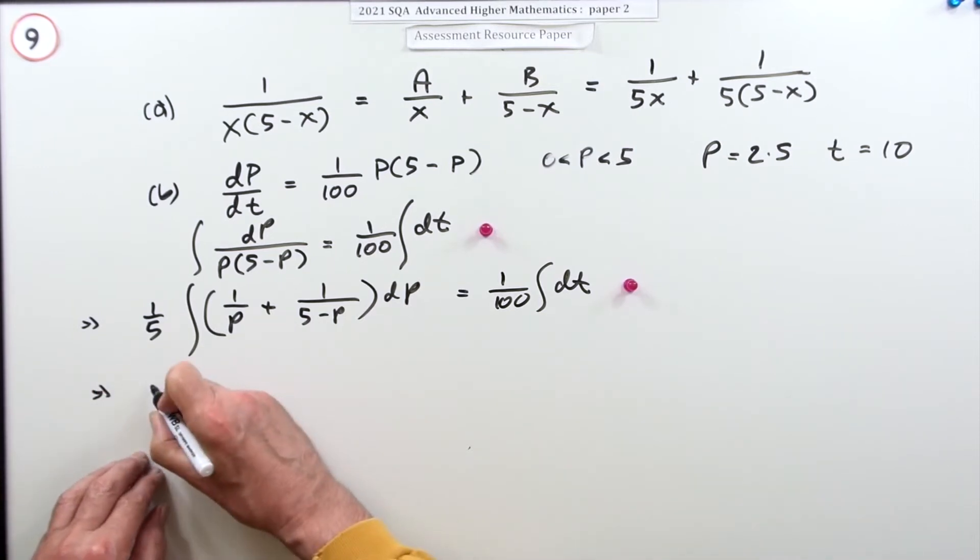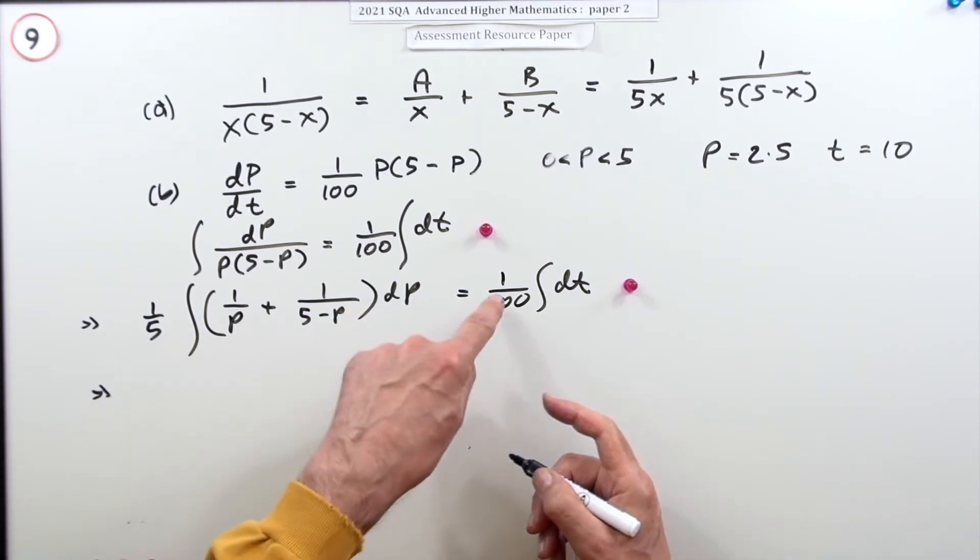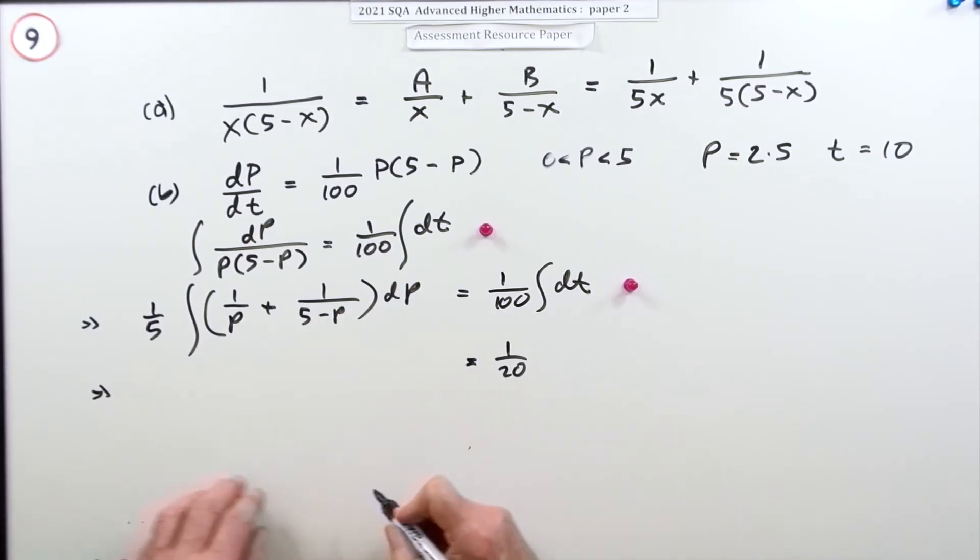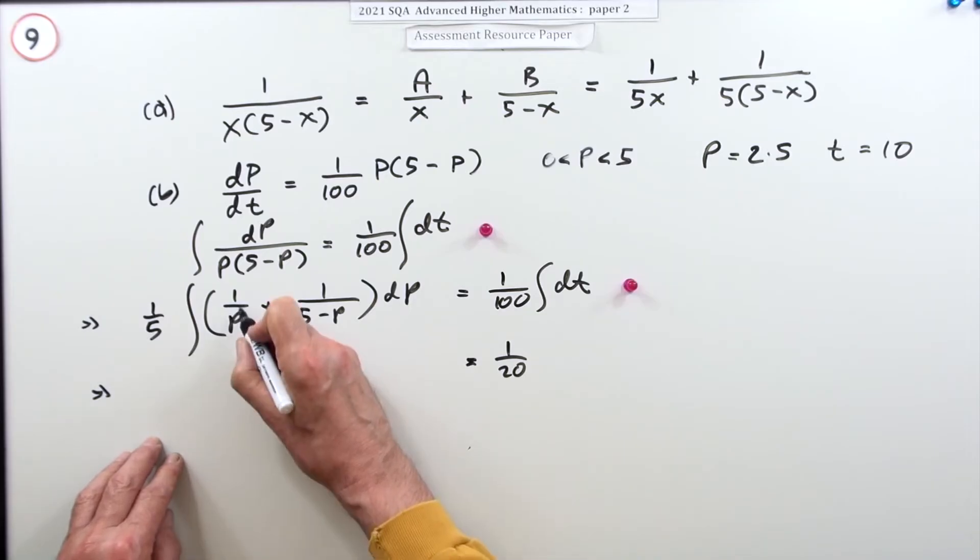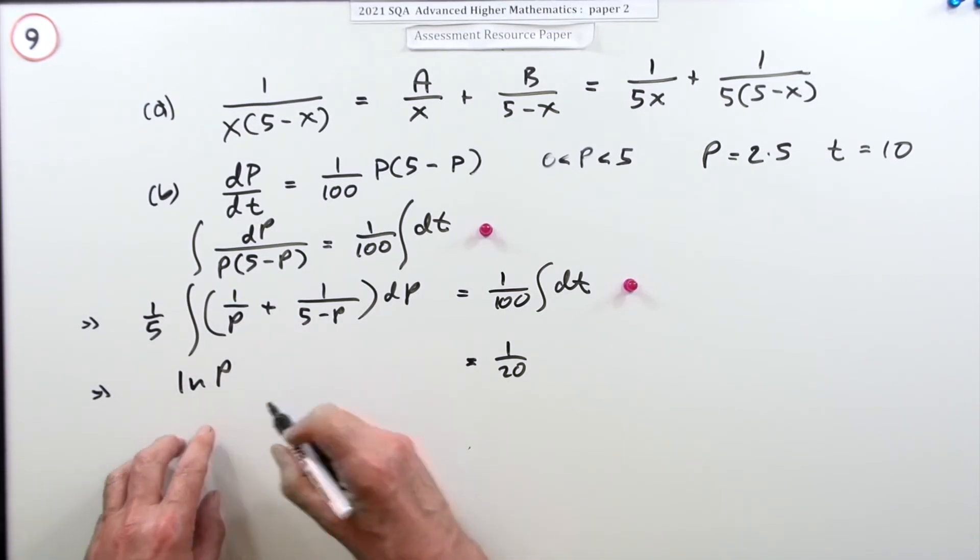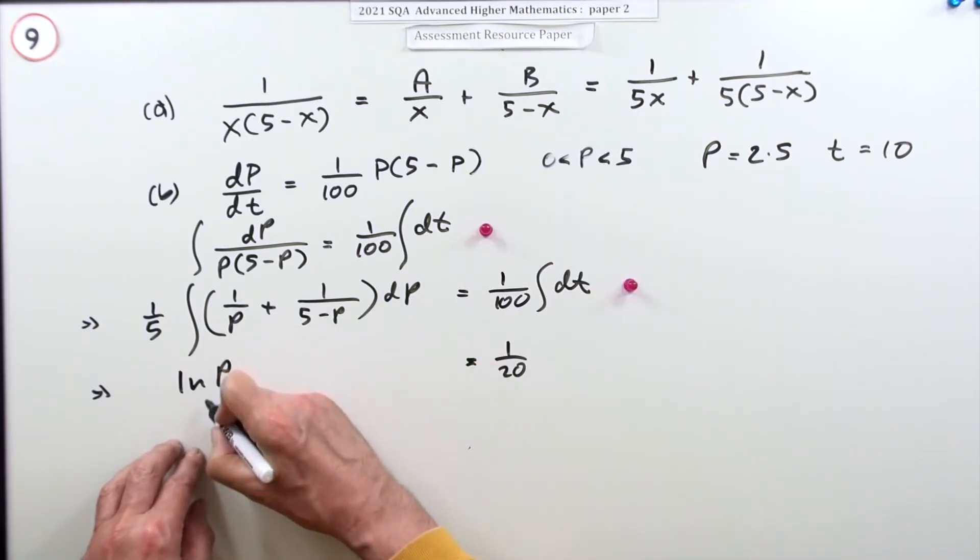Now there's two marks for the integration. So I've got a fifth, I suppose I could take that across just now and make that a twentieth. So you've got, integrating this would be 1 over P goes to ln of P, and that's quite safe because P is positive, I don't need to put the modulus.